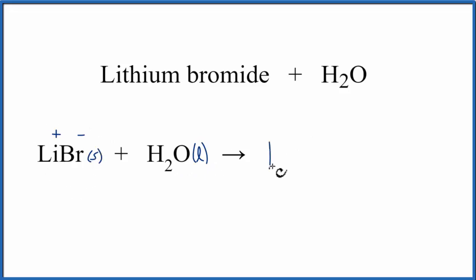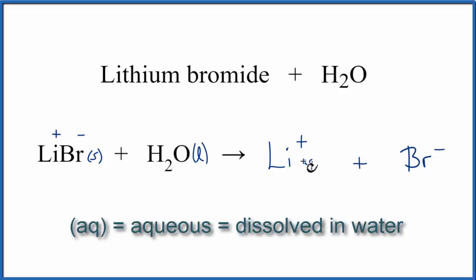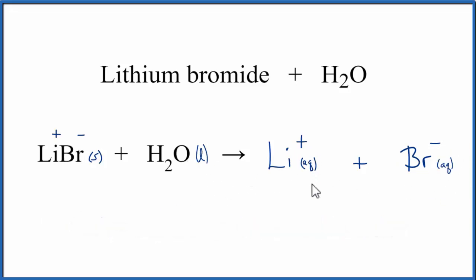So we'll have Li plus and Br minus. That's the bromide ion. To show that these ions are dissolved in water, we can write AQ after each one. And AQ stands for aqueous, dissolved in water. Because of that, we don't have to write H2O on this side of the equation, because the aqueous tells us that it's already there.